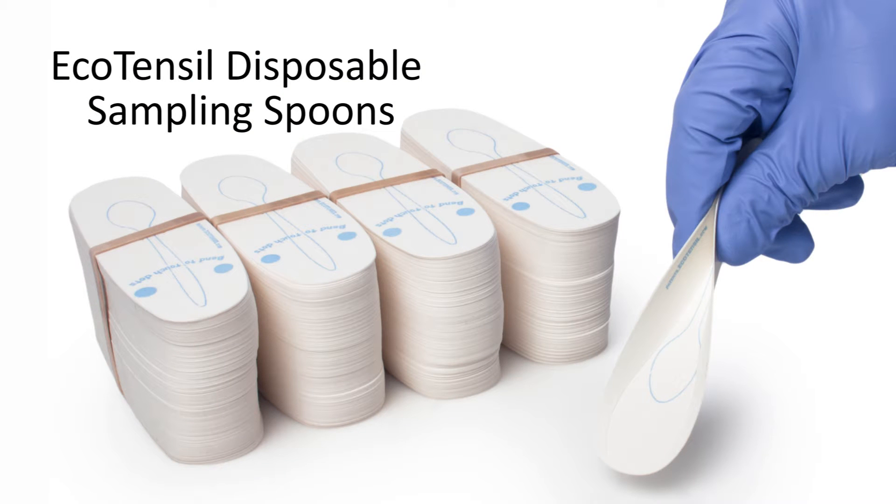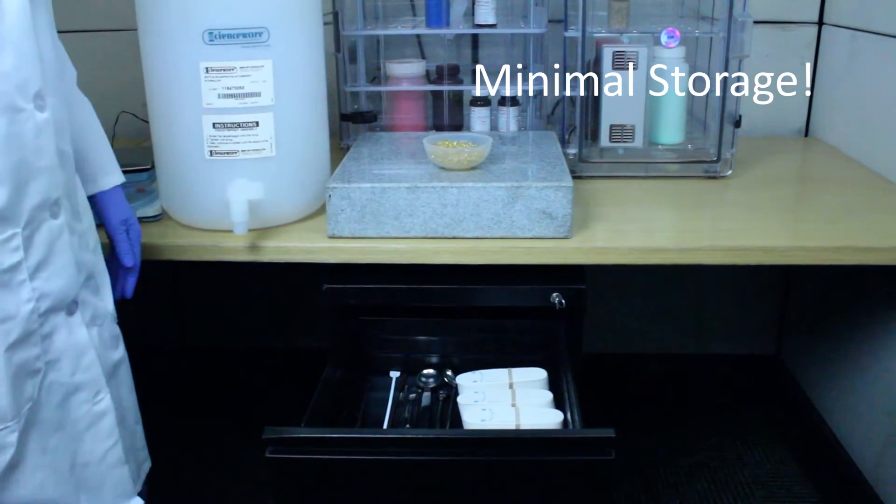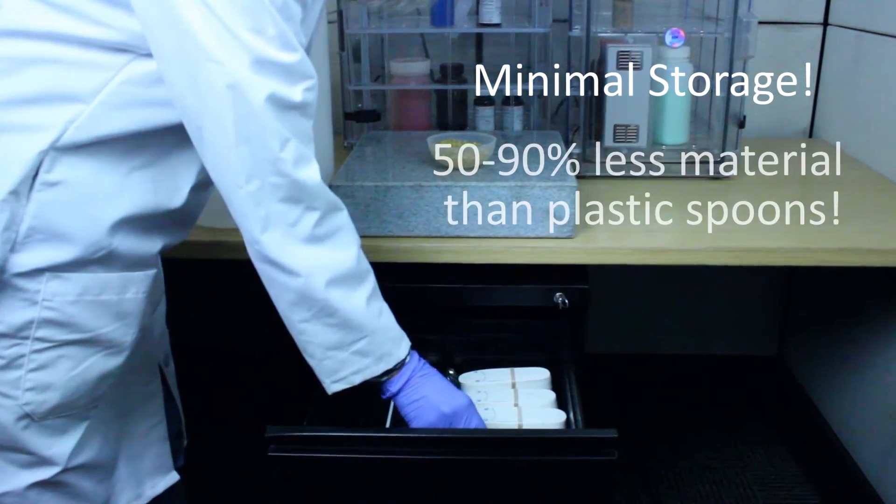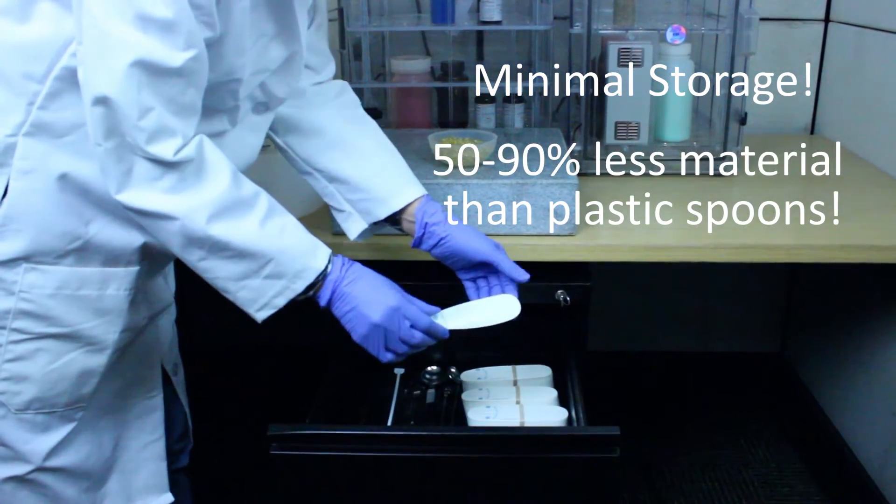Introducing EcoTensil disposable paper sampling spoons. Requiring minimal storage space, they use 50 to 90 percent less material than plastic spoons.